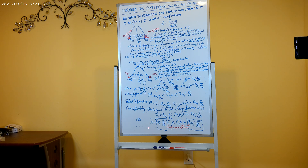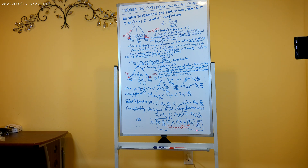So mu falls between x-bar minus the margin of error and x-bar plus the margin of error. The margin of error depends on the confidence level (Z_α/2), the population standard deviation sigma, and the square root of the sample size n. If you have any questions, please write a comment and I will get back to you as soon as possible. Please subscribe to my channel by hitting the red subscribe button.